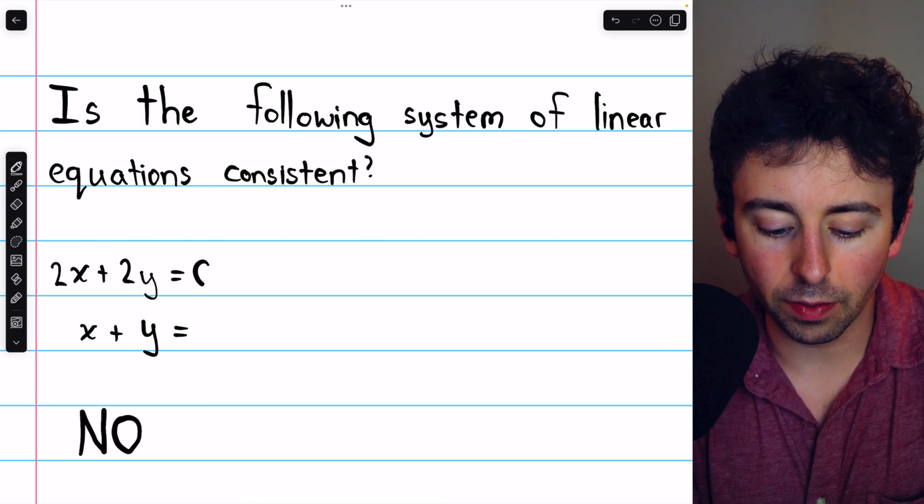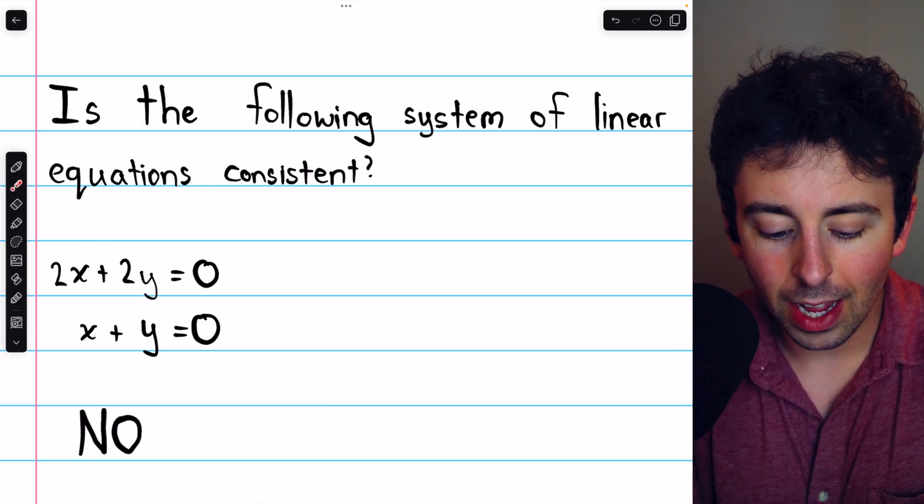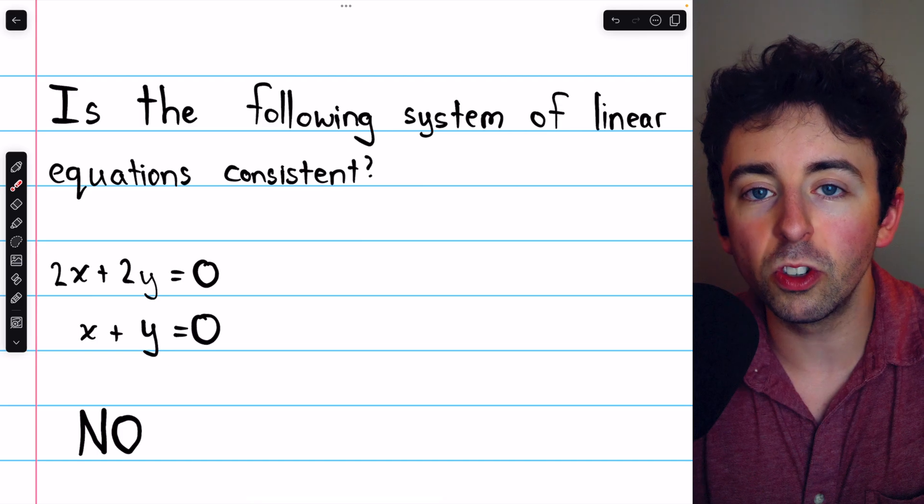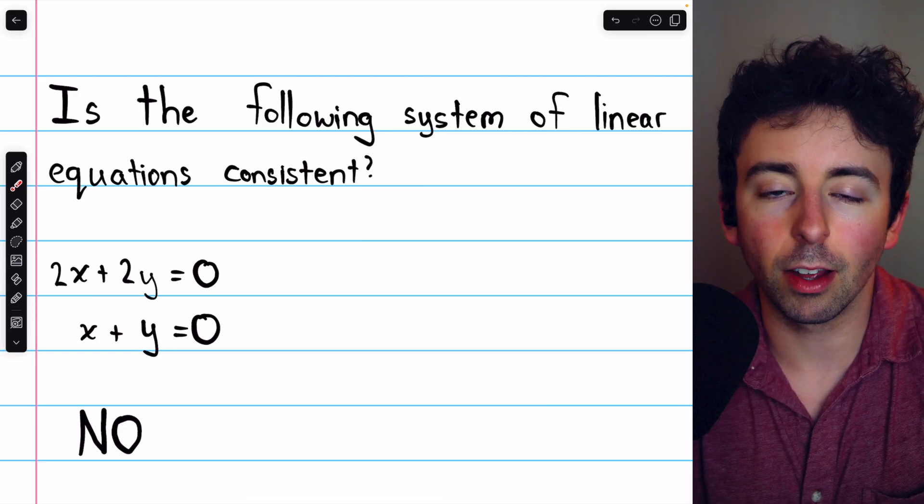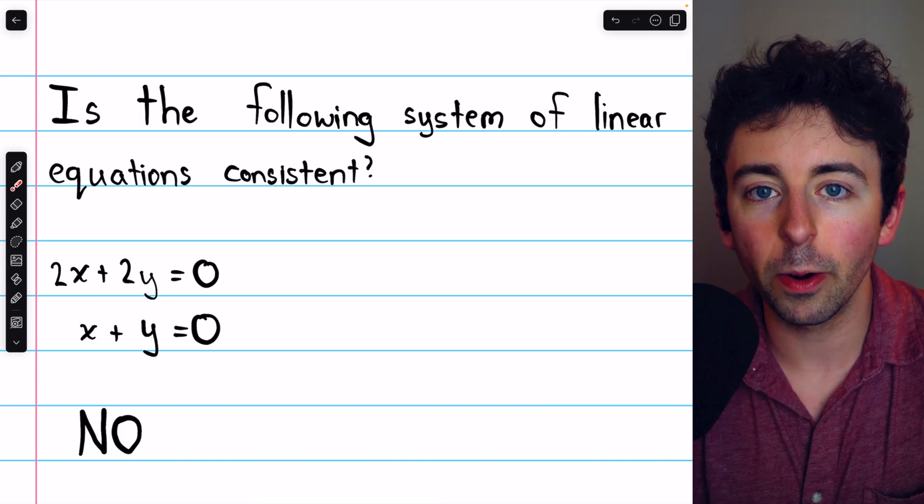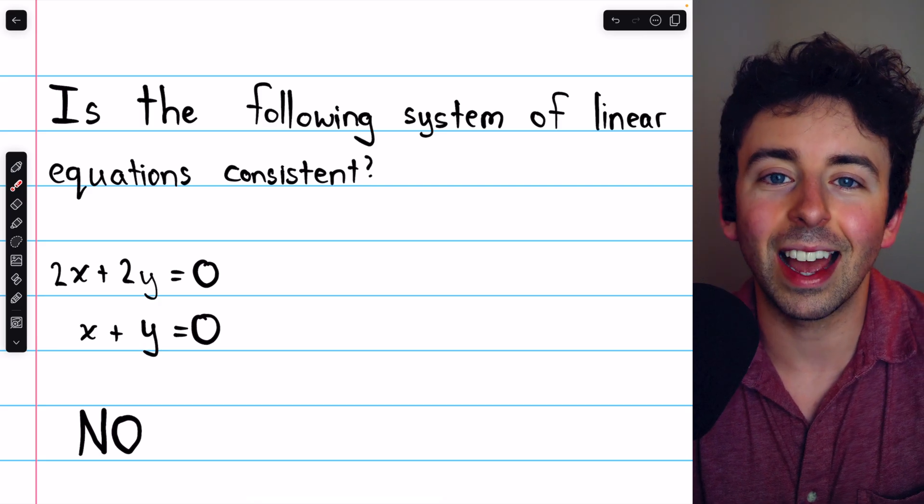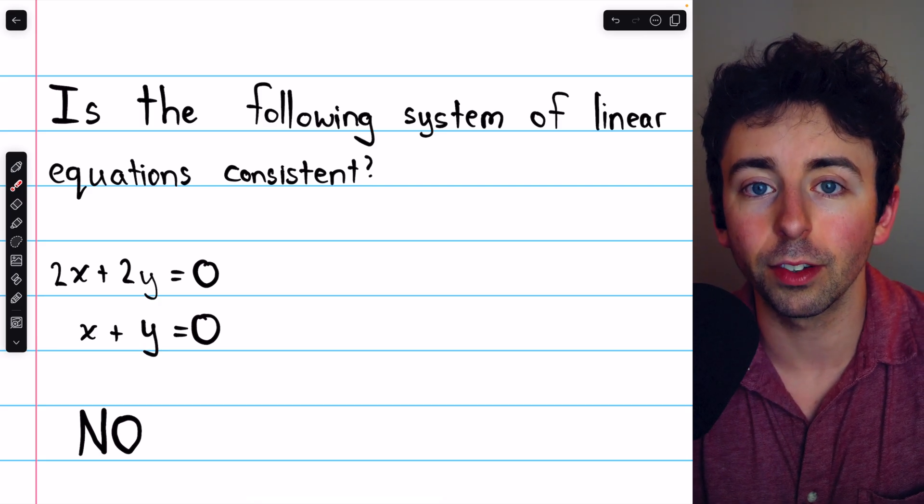On the other hand, if all of these constants were zero, then this would be what we call a homogeneous linear system, because all of the constant terms are zero. And such a system always has at least one trivial solution.